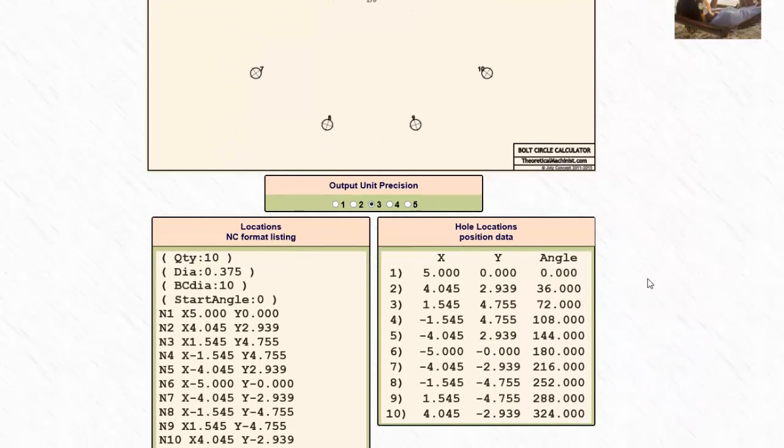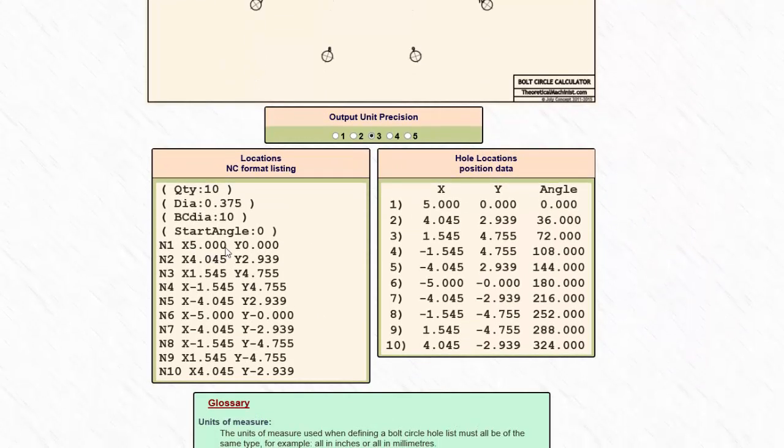It will draw the hole locations. And then down below it will actually give you the x and y locations the way you would use them in a program. And then also the hole locations position data. So it will give you the x and y locations, but also the angle in relation to the first hole which is at 0 degrees.